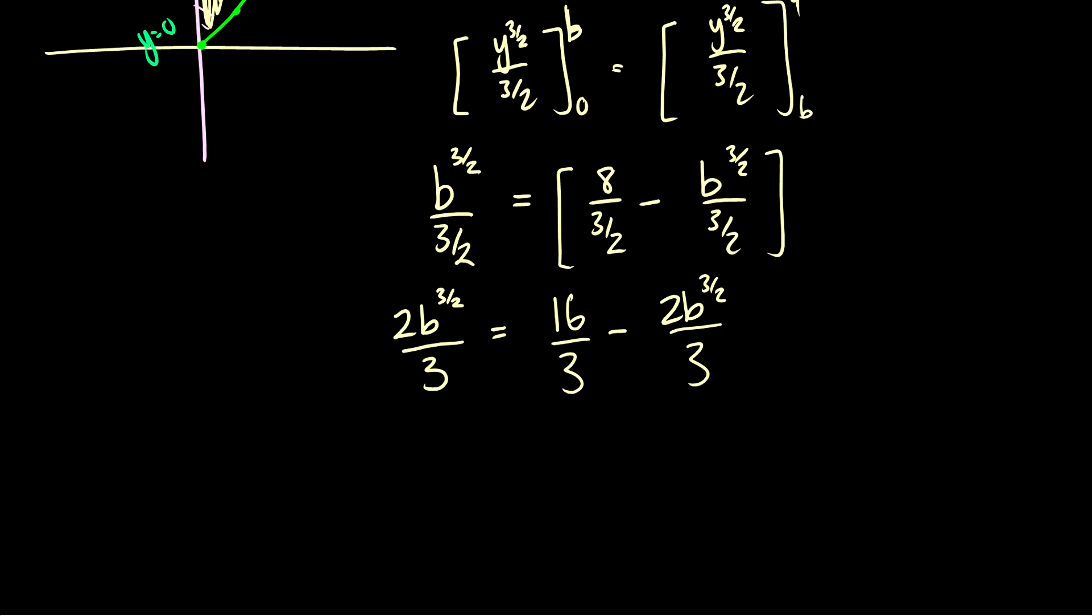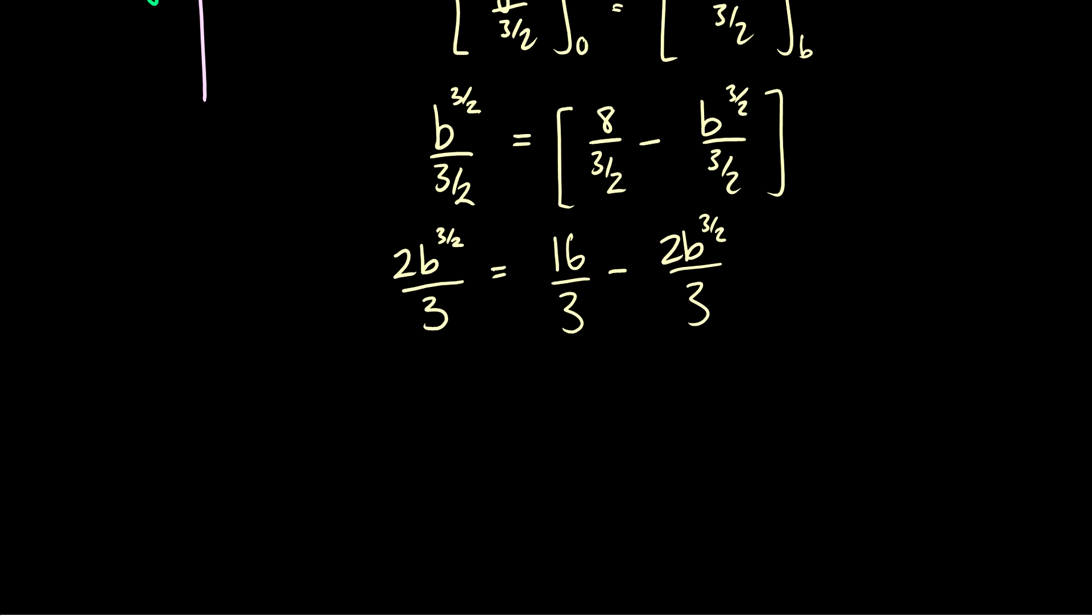Let's put our b's over to one side. Actually in fact we can multiply everything by 3 to get rid of the denominator here. So 2 b to the 3 halves is equal to 16 minus 2 b to the 3 halves. Let's bring the 2 b to the 3 halves on the right side to the left.